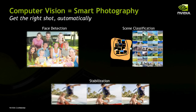An area that Kari's half of this talk will cover is smart photography or computational photography — how we can use vision and an understanding of the scene to take a better photograph. An obvious example is face detection: if you know where the face is, you can weight the exposure and focus the camera on the face. But there's a whole lot more that Kari will talk about.